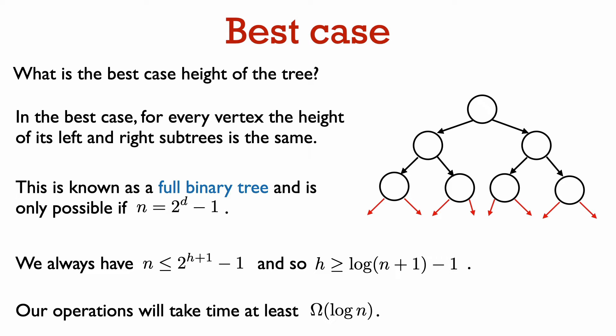Now let's consider the opposite extreme. How small can the height be when the tree has n nodes? The best case is when every level of the tree is completely full. We call a tree with this property a full binary tree.